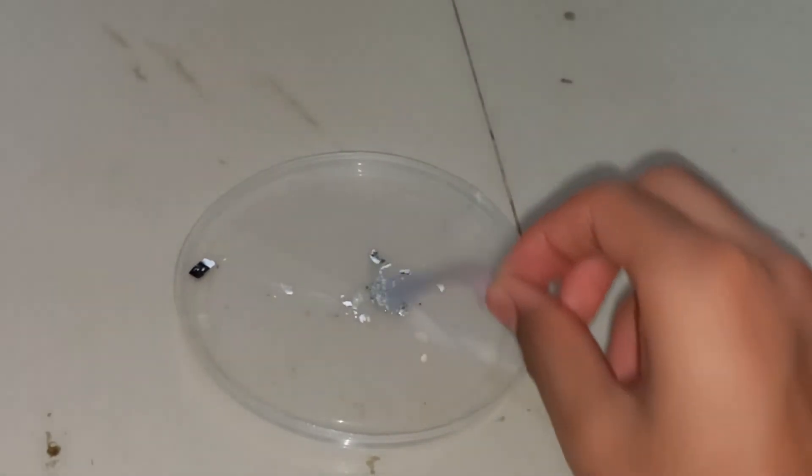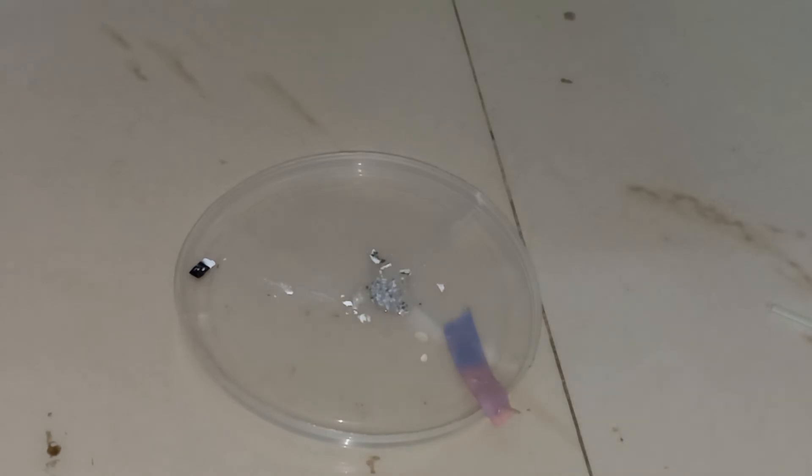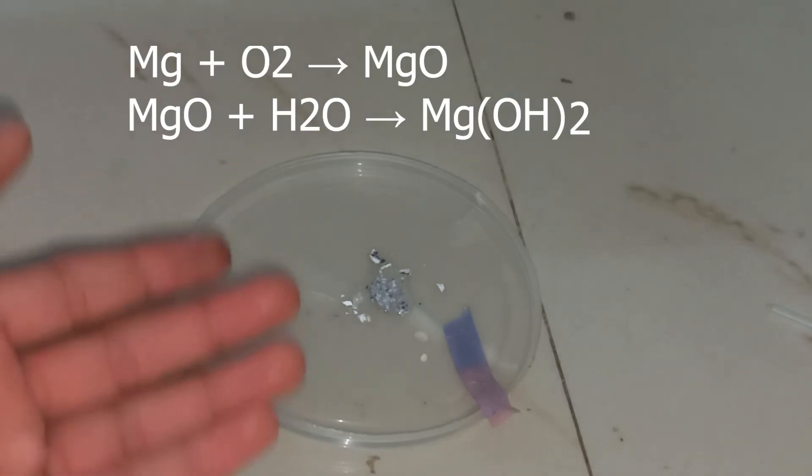So let me get it out. You can see the color is blue which means it is basic now. Magnesium hydroxide is basic. So let me tell you the equations. What happens is that when we take magnesium strip and when we burn it, it reacts with the oxygen to form magnesium oxide. And when we put it in water, it reacts with the water to form magnesium hydroxide.